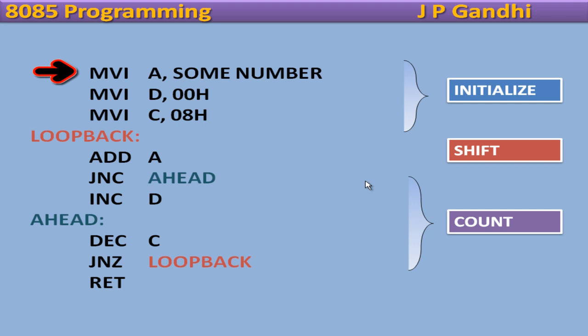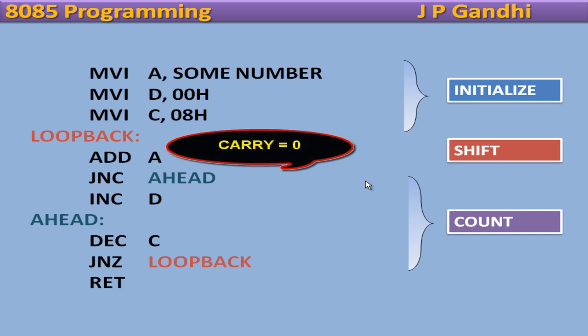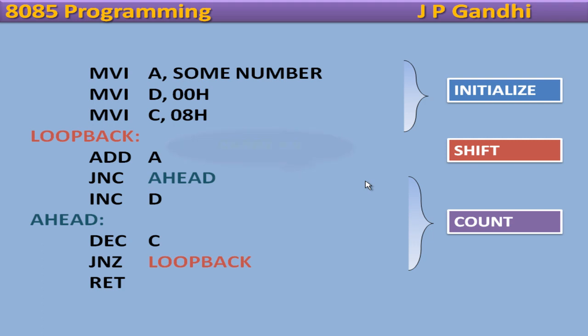So we have MVI A, some number, put the number in register A. MVI D 00, put the value 00 in register D, that is reset the bits counter. MVI C 08, put 08 in register C, add A to itself, jump if no carry to ahead, skip the incrementing of the ones counter. So if the value of C is 0, we do not increase the value of D and if the value of carry is 1, then we increment the value of D.